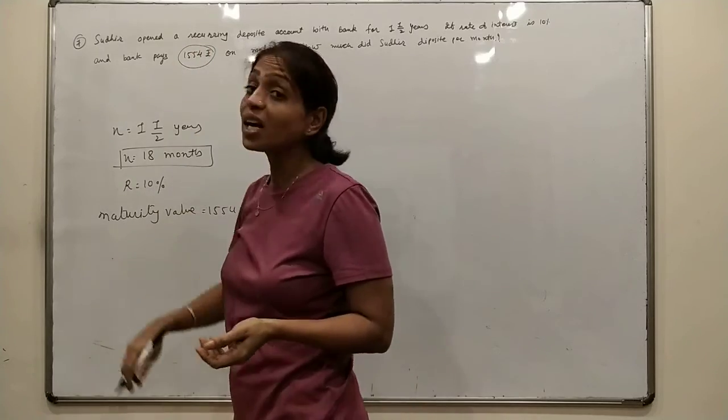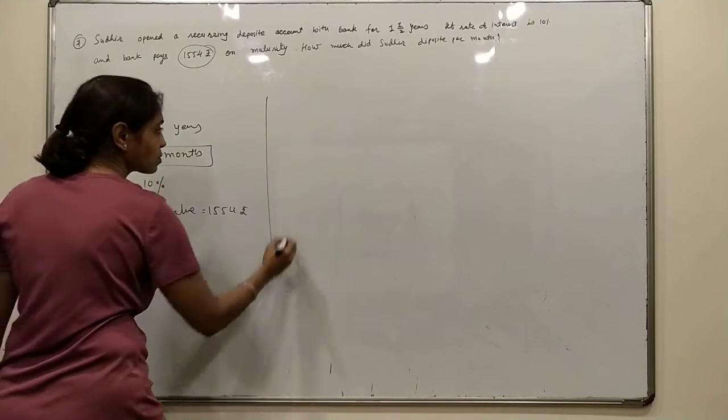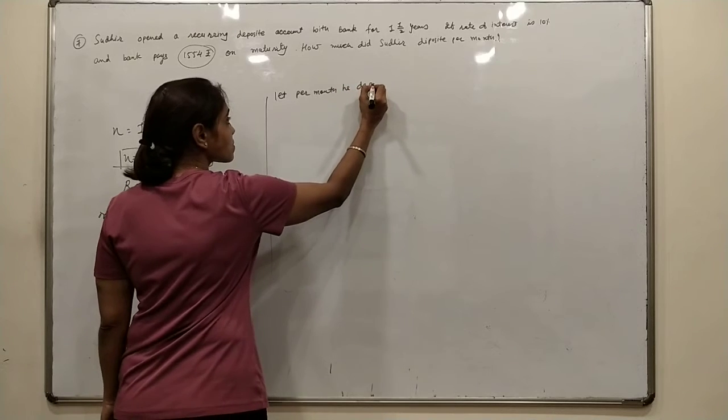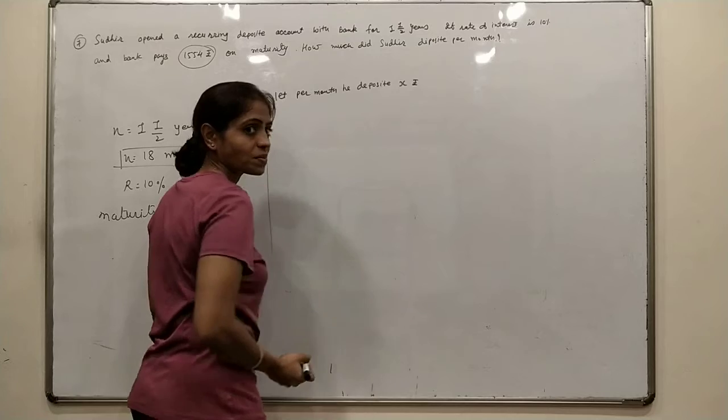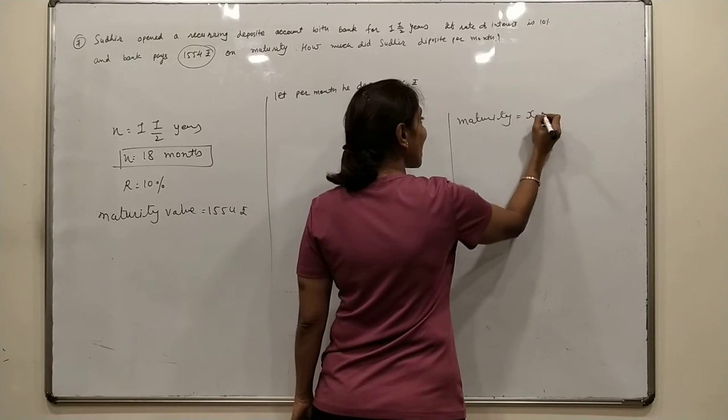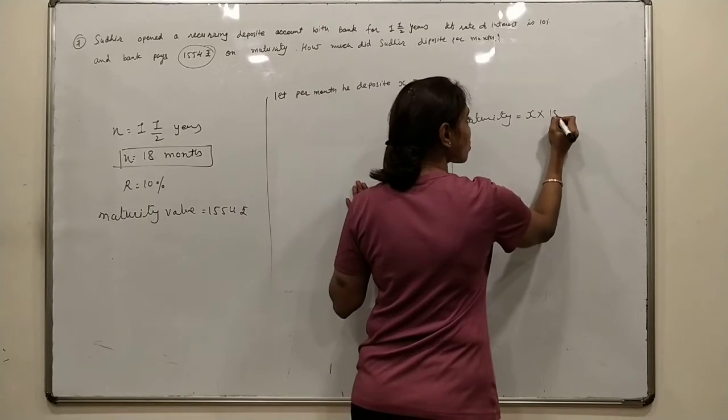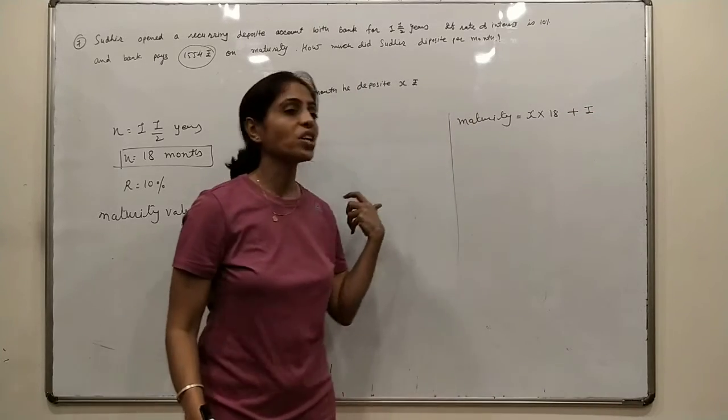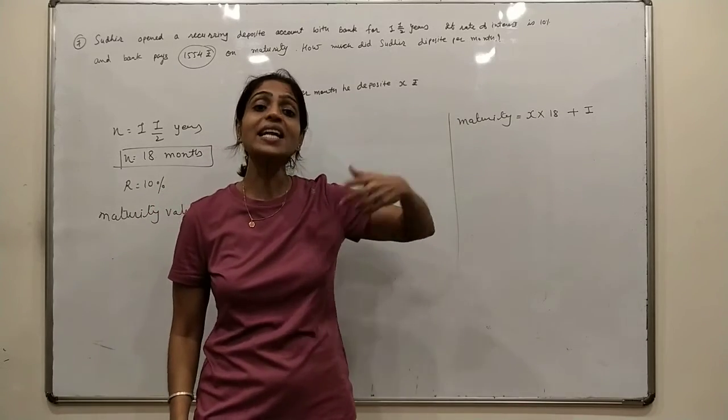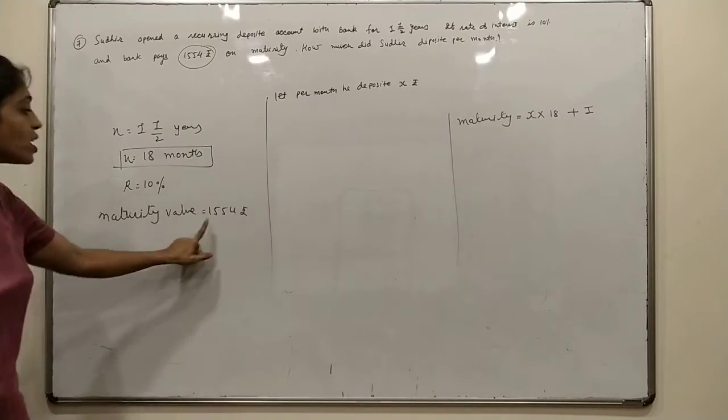So with interest of 1554 rupees at maturity, let's say per month he deposits x rupees. At maturity, he deposited for 18 months, so 18x rupees plus interest. The maturity value is 1554. So per month he deposits x rupees for 18 months, that's 18x rupees plus interest. The maturity value is 1554.